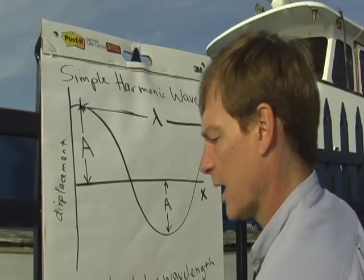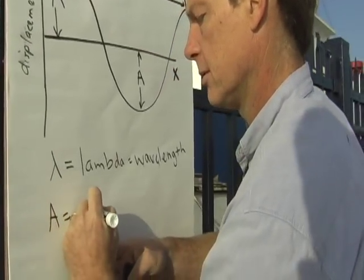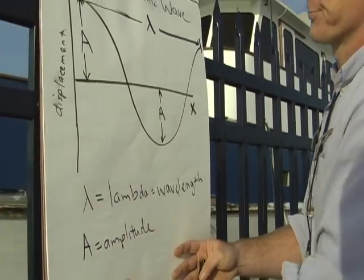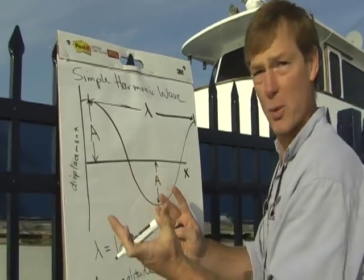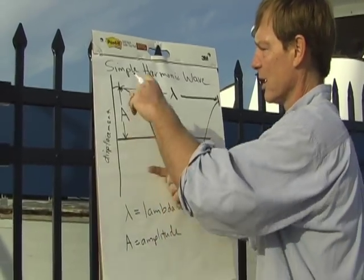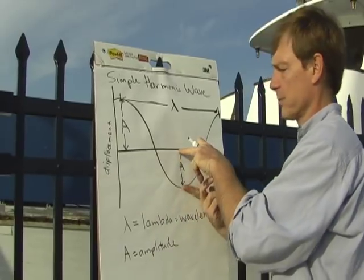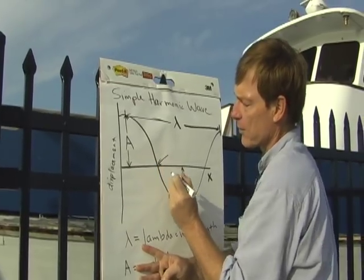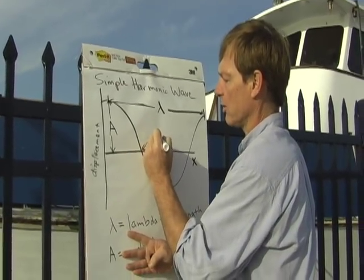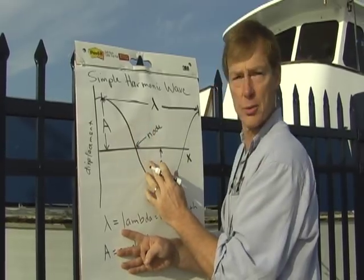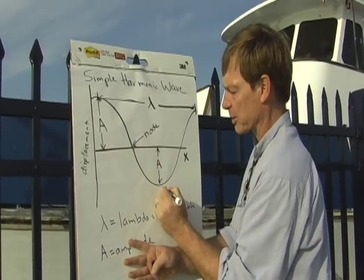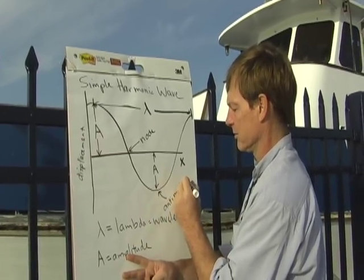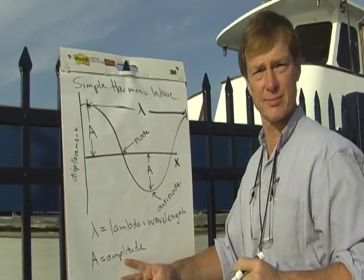So traveling with the wave, that tells you a lot of what you need to know: how big is it, how big does it get, how long is each cycle? The points where there's no displacement are called nodes, and the point where you have maximum displacement is called the anti-node — a relative of the node.